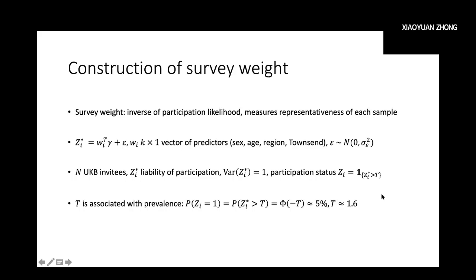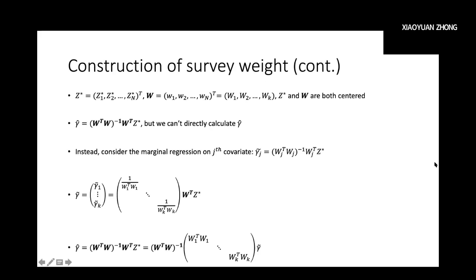This threshold is associated with the prevalence in the population — the percentage of participants in the general population. For UK Biobank specifically, this number is about 5%, so the threshold we can calculate is approximately 1.6. After introducing our model, we can further proceed to estimate the survey weight. We basically stack each individual's liability into a column vector denoted Z-star, and stack each individual's predictors into a large matrix denoted W.